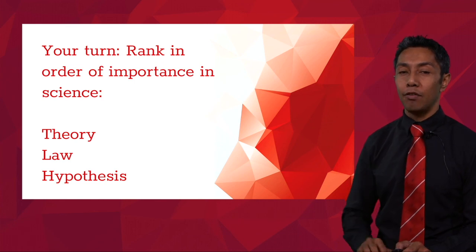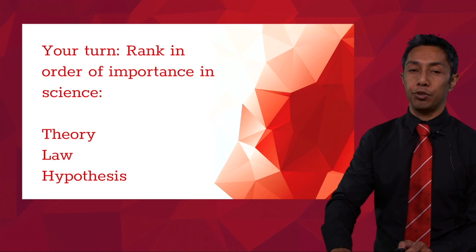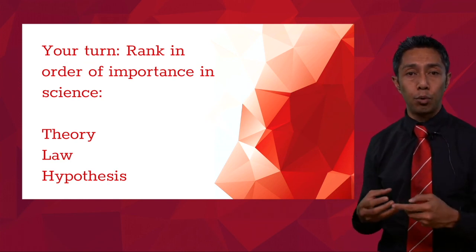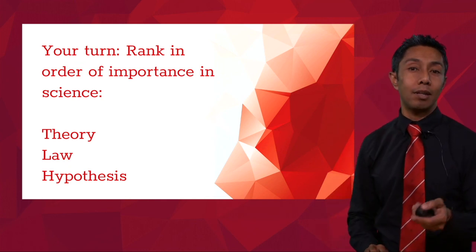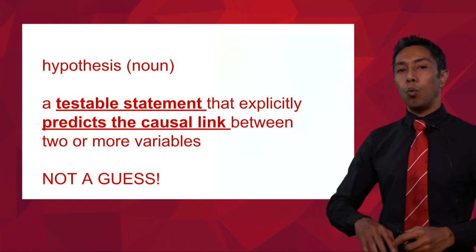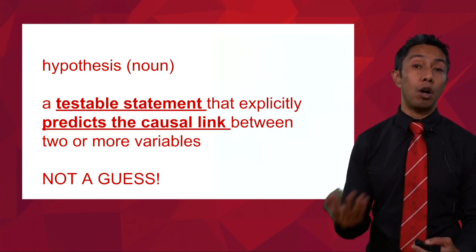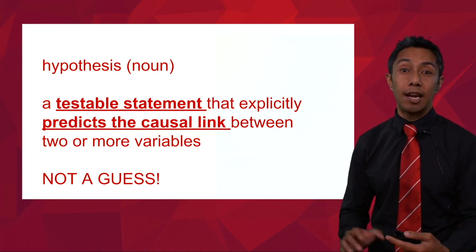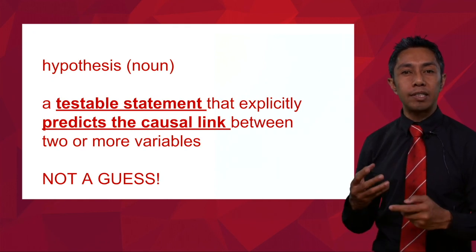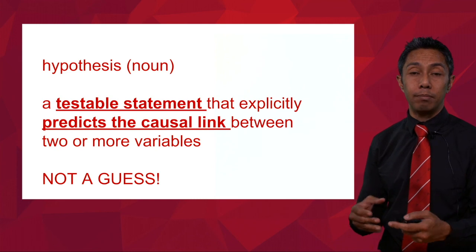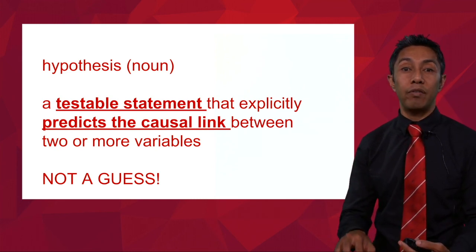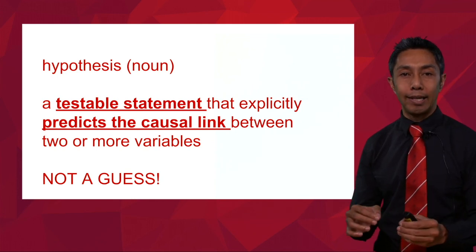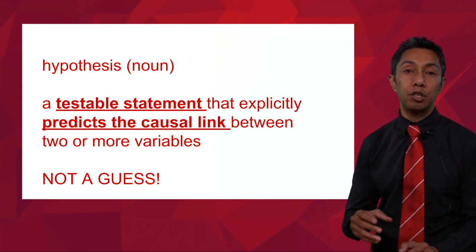Welcome back. Hopefully you've now listed what you think is most important and least important of those three. All three ideas are actually important within science, but some are more important than others. When you talk to people of the general public and ask them what a hypothesis is, you generally get answers like 'it's a guess' or 'it's an educated guess.' However, in science, when we talk about a hypothesis, we're talking about something very specific: a testable statement that explicitly predicts the causal link between two or more variables.